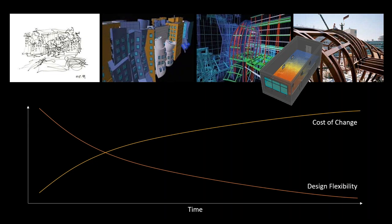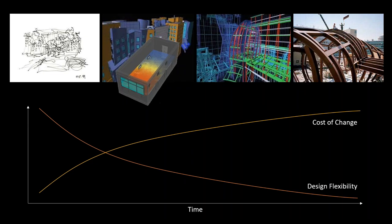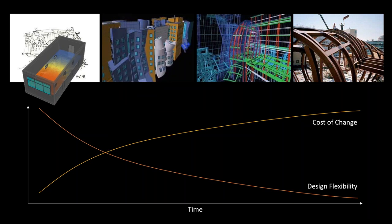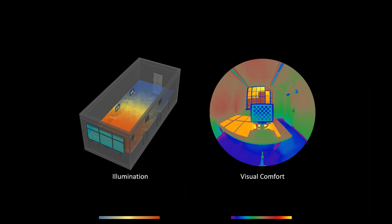Work done by our lab at MIT—for instance, the DIVA for Rhino program—has helped to automate workflows and bring the role of simulation earlier into the design process. What I'd like to show today is that we can bring that role earlier still and get back simulation feedback while we're developing ideas.